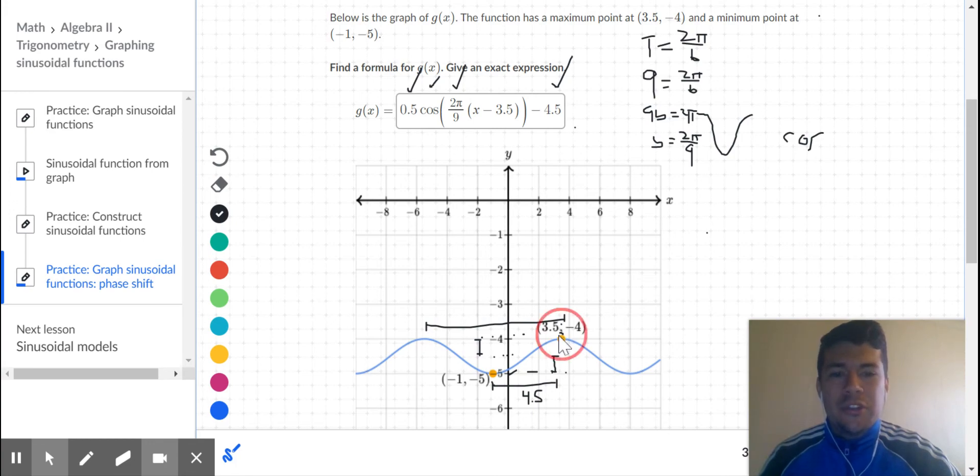Since cosine is supposed to start at its maximum, I need to think: how much did my maximum shift? Because the maximum is supposed to be the y-intercept. That means this y-intercept moved to the right. If I were able to take this point back to the y-intercept, that means my function moved to the right.